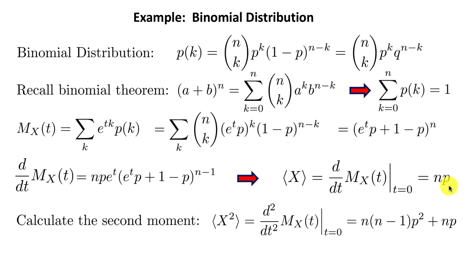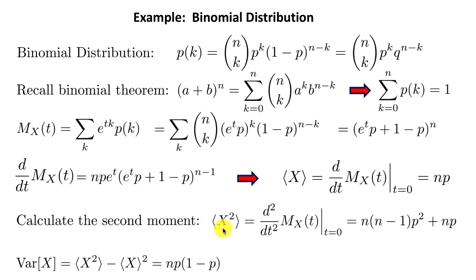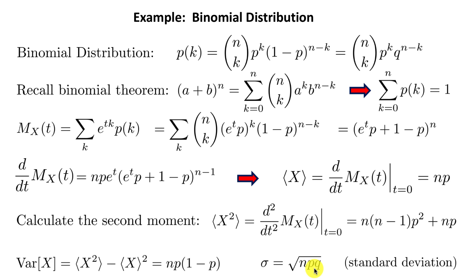We can get the second moment by differentiating twice: d²/dt² of M(x) and then putting t equal to 0 gives the second moment of x. This gives us the variance of x — the square of the standard deviation — which is np(1 minus p), which we write as npq.